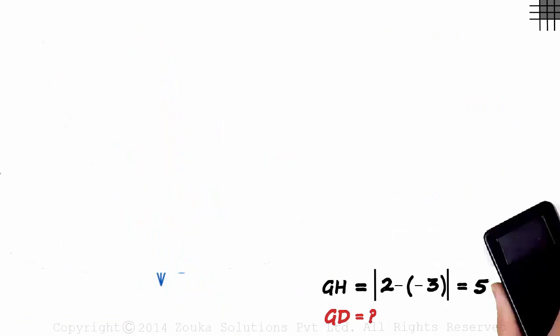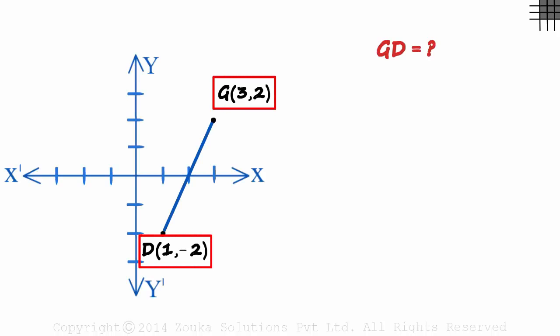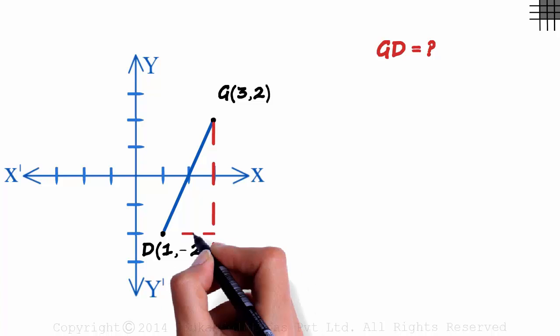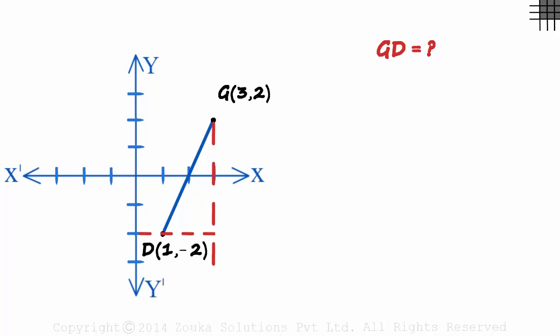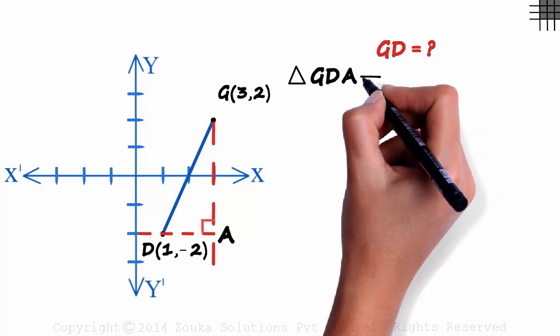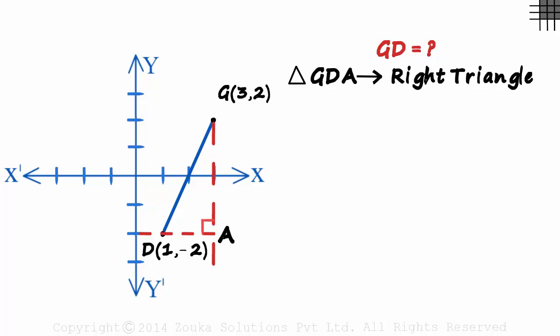Let's erase this and look at an example to understand this. We have been given the coordinates of G and D and asked to find the distance between them. From the two points, draw perpendicular to the x-axis and to the y-axis. It's obvious that the angle formed here will be a right angle. We call it point A. Now look at triangle GDA and you can probably guess how we can find length GD. Yes, triangle GDA is a right triangle.